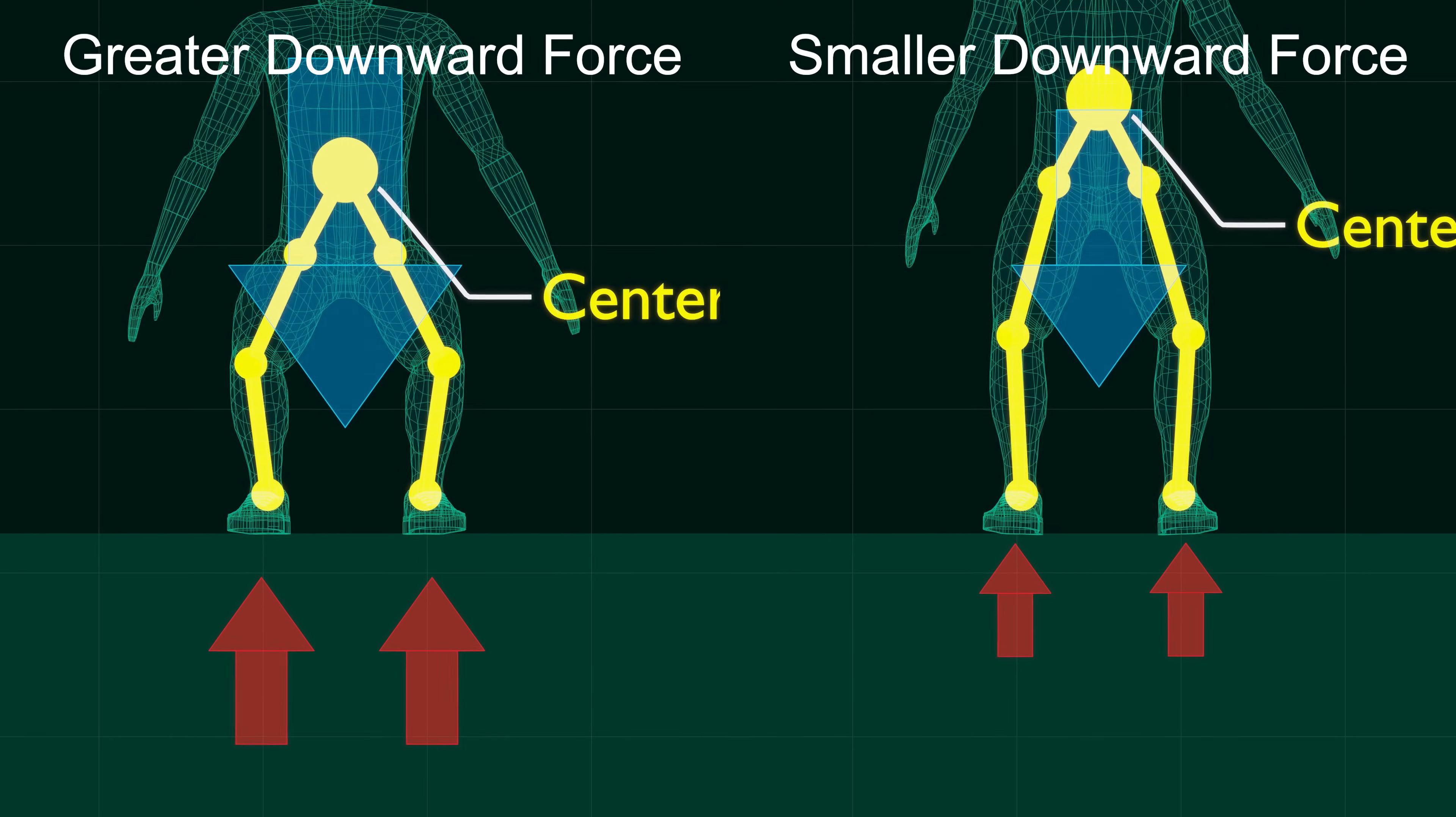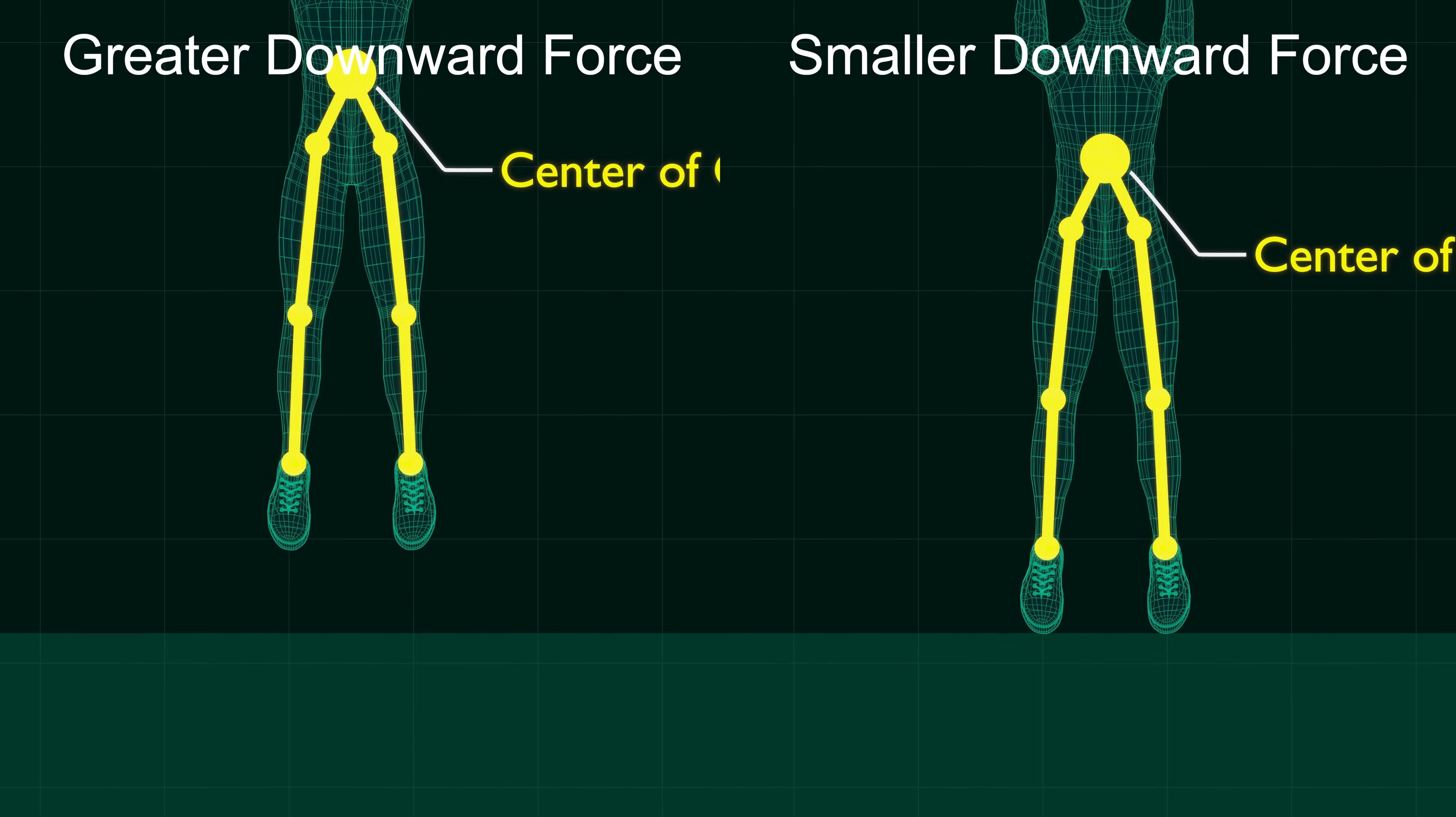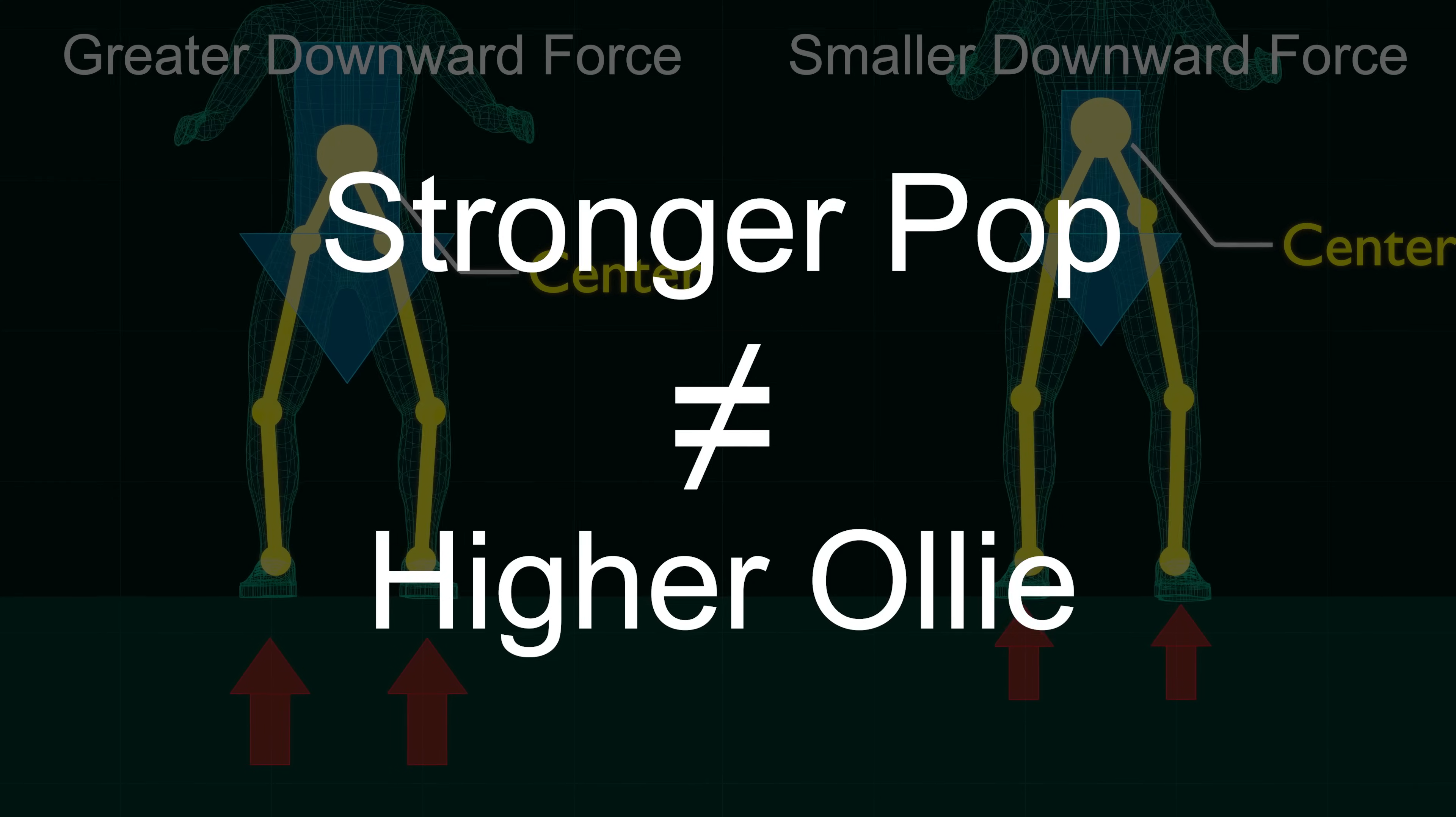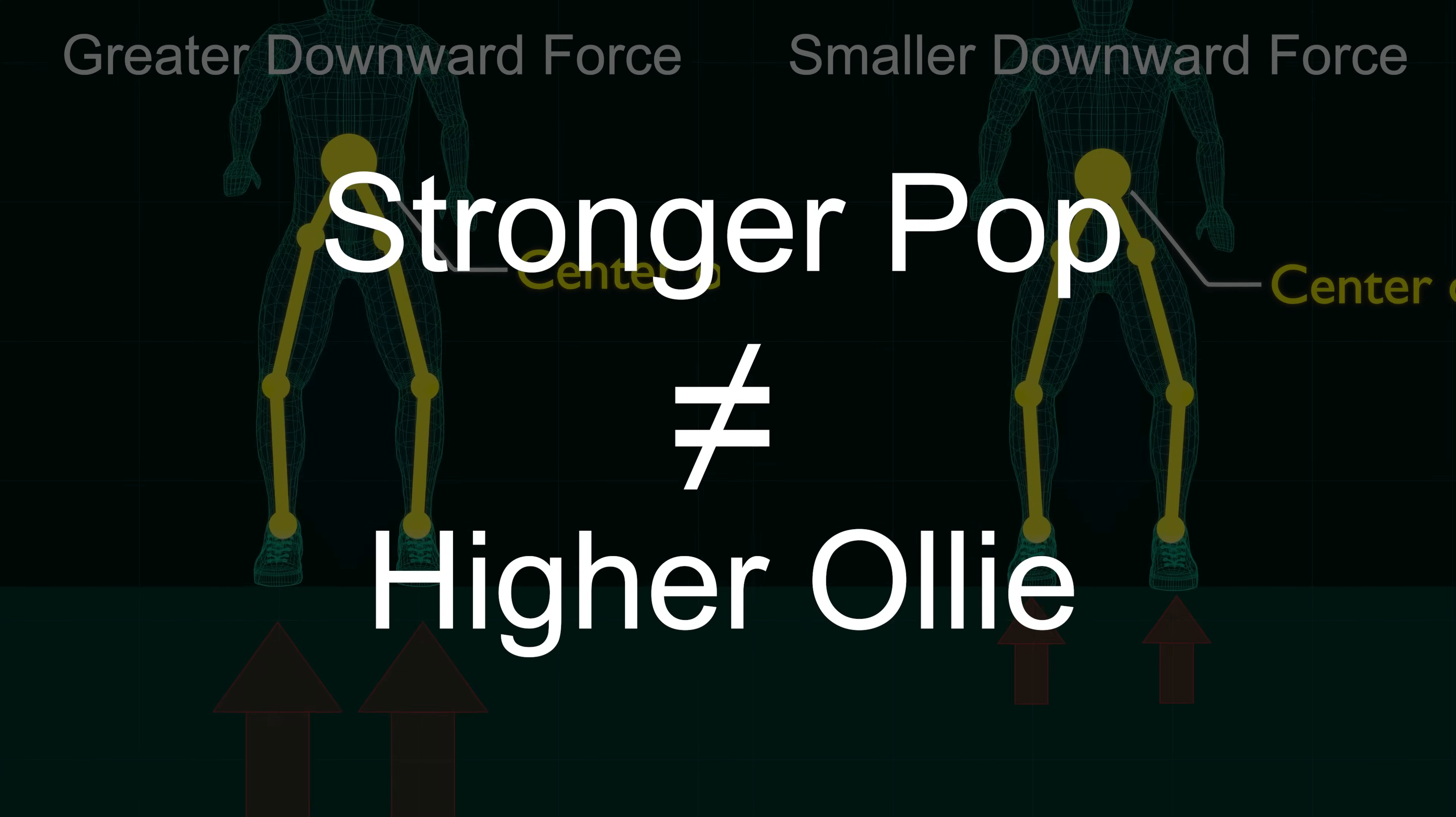The greater the force you apply to the ground, the greater the force the ground pushes back against your feet. While this means you can jump higher by applying a greater downward force, it does not translate to you being able to Ollie higher by popping harder due to the following factors.